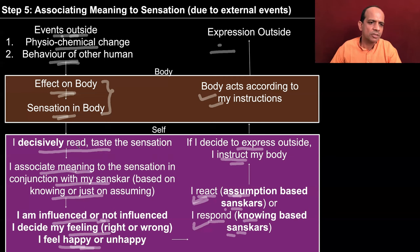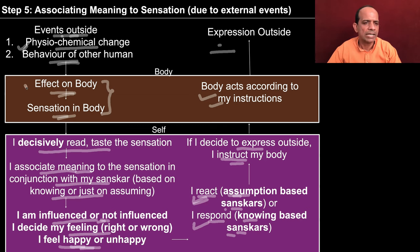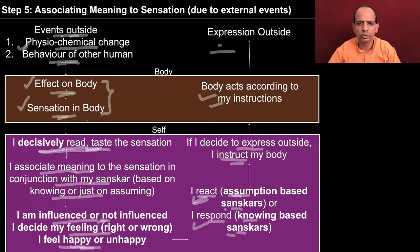Now let us take another example — a physiochemical change. Let us say a mosquito sits on your body and bites you. This is the case of a physiochemical change, an event outside, and the biting of the mosquito has an effect on the body, and then there is sensation in the body. You consider it important to keep your body healthy, so you decisively read and test the sensation. But if you are lost in your work, you might not read the sensation — the mosquito may be biting you. But if you have time and consider it important, then you are able to read the sensation.